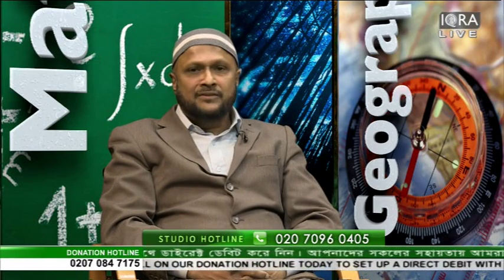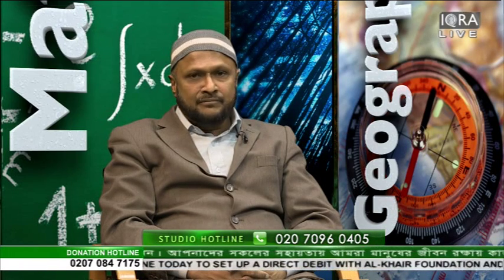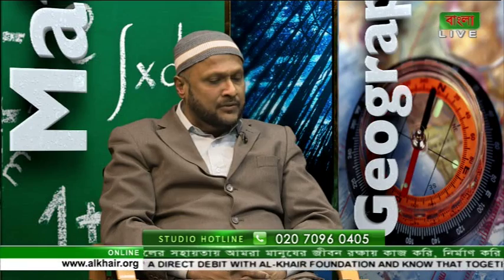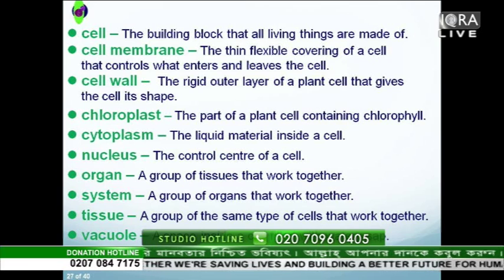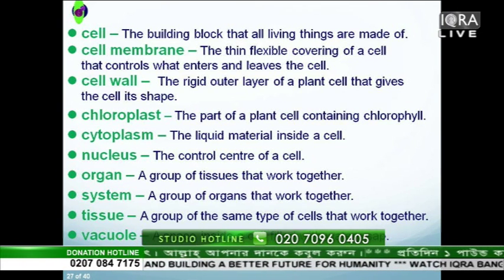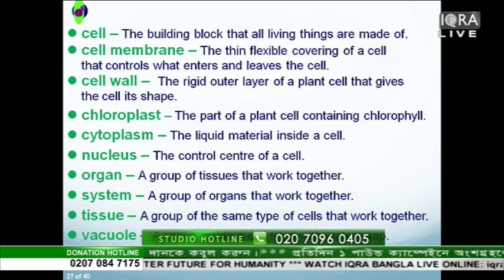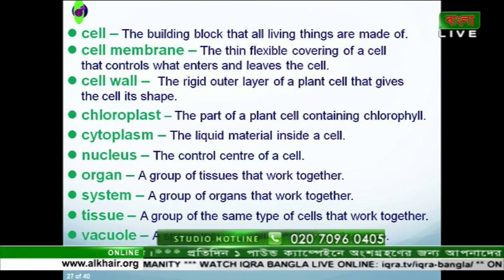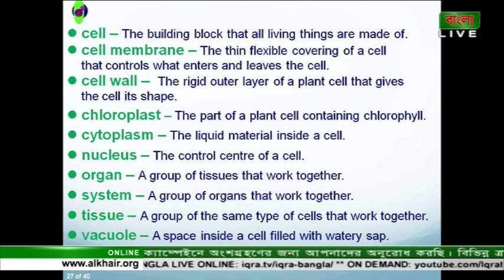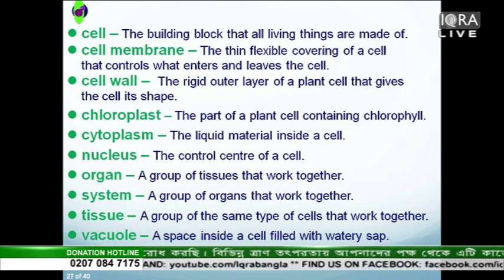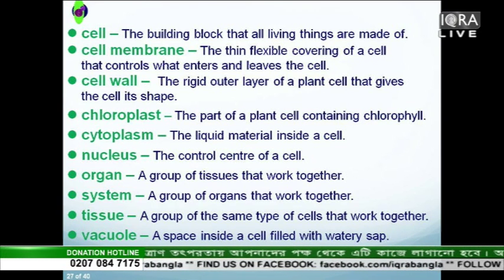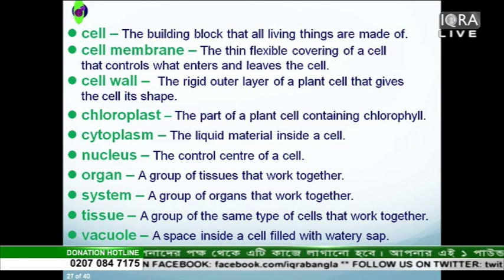Let me request Brother Nasr Islam, assistant teacher of Swanley High School and science subject specialist, to please sum up what we have learnt. Can we have a look at slide 27? Okay, so the cell is the building block of all living things. The cell membrane controls what comes in and out of the cell. The cell wall is found in plant cells, provides a rigid outer layer, and gives the cell its shape because plants don't have bones.